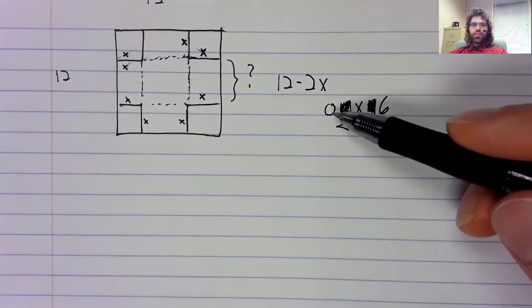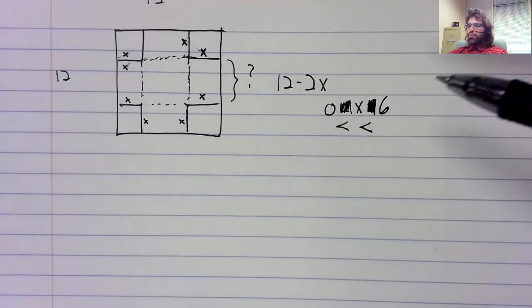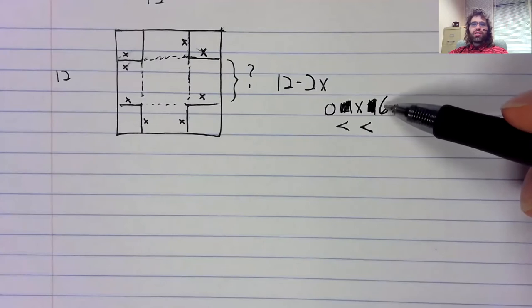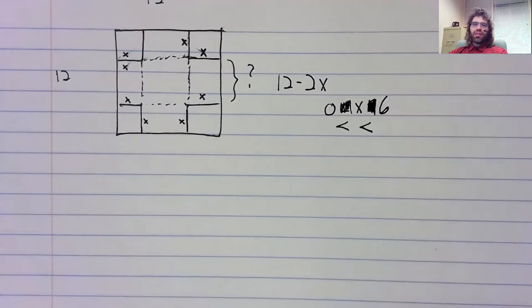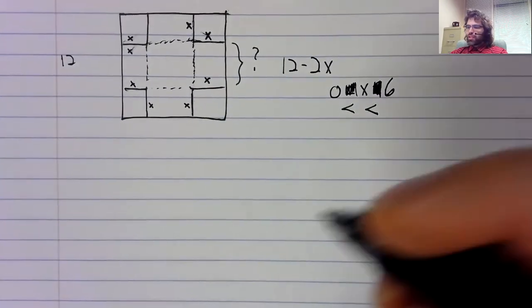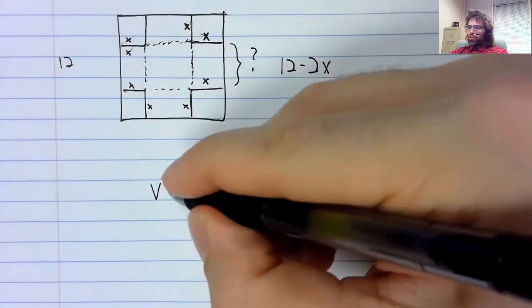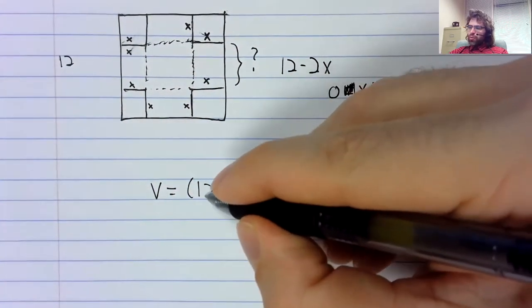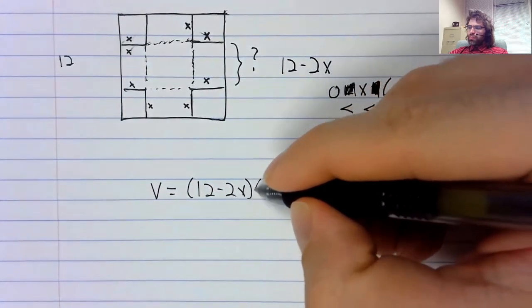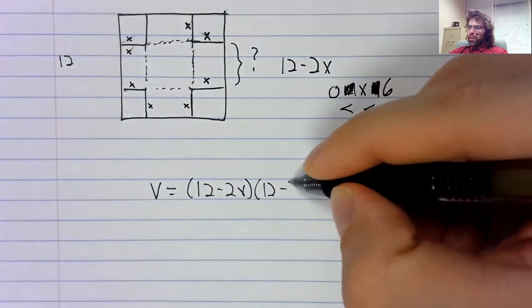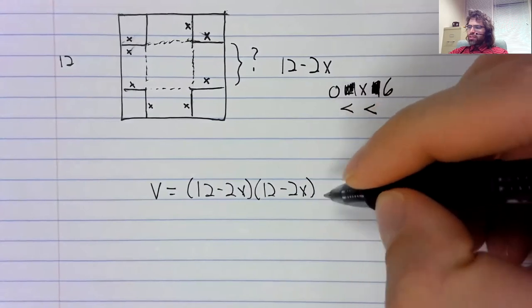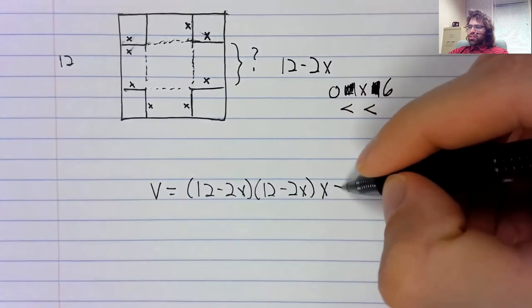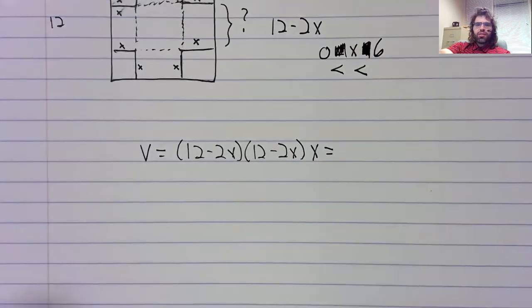x is strictly greater than 0 and x is strictly less than 6. And the volume is 12 minus 2x times 12 minus 2x times x.